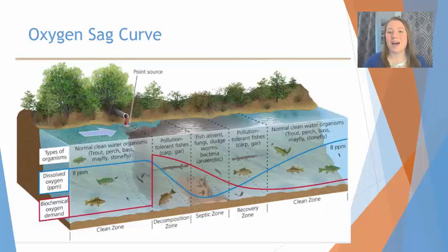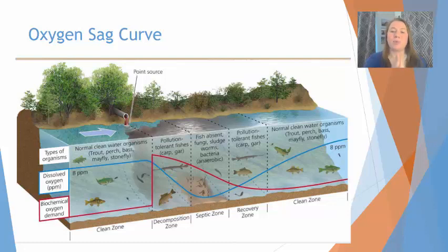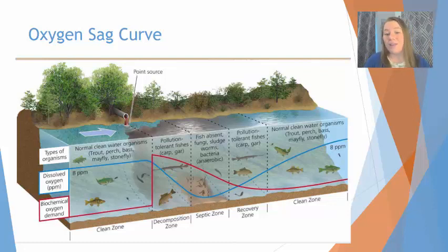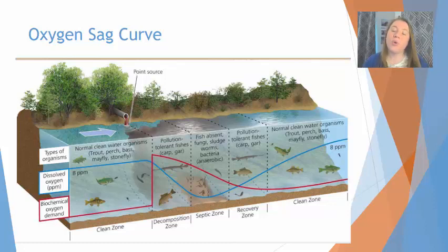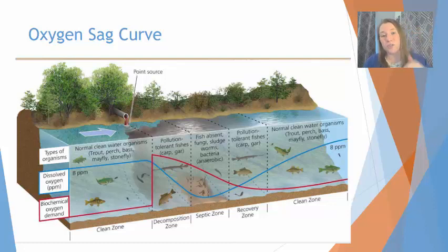This can lead to what's called an oxygen sag curve. The oxygen sag curve looks at a point over a period of time, and you can also look at it as a point along a river. In this graph, the blue line represents the amount of dissolved oxygen, and in a healthy aquatic ecosystem you want to have a lot of dissolved oxygen. The red line represents the biochemical oxygen demand, which is an indirect way to measure the amount of nutrients in the water. At the point where pollution is added from a pipe discharging organic matter, we see a sudden spike in the biochemical oxygen demand, and the amount of dissolved oxygen starts to decline.